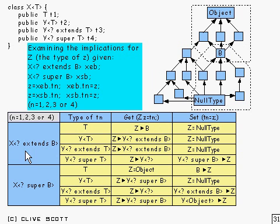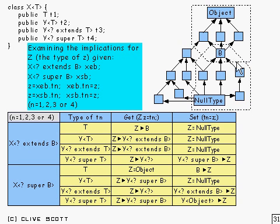then T is going to lie somewhere down in the subtypes region. We've got to look for a supertype of B, or of any of those subtypes. The one thing which is a supertype of all of them is B itself, so Z must be B, or a supertype of B.